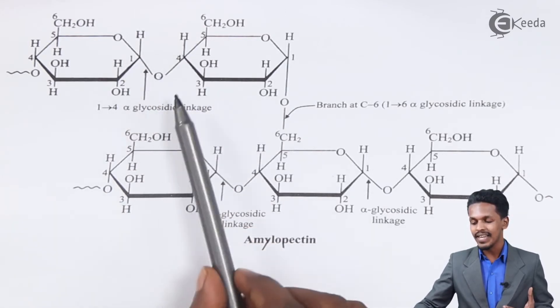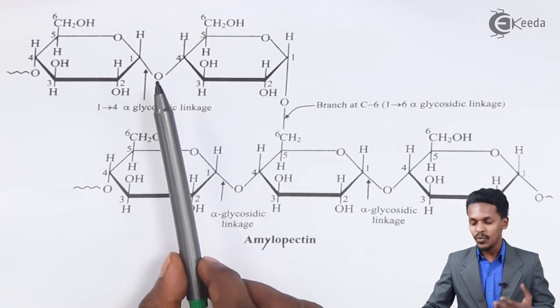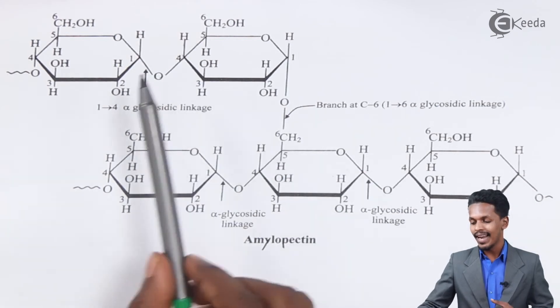...there is an alpha glycosidic linkage which is similar to the previous one, amylose. Here also the same thing is present, as you can see. The difference is only the formation of branching at several units.